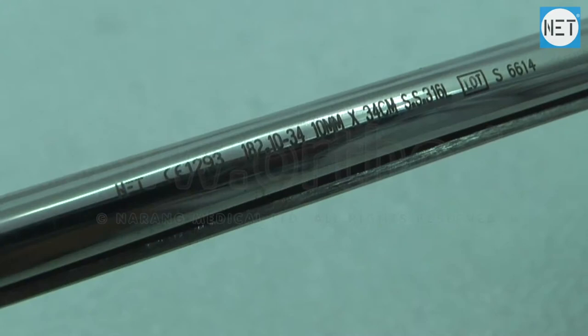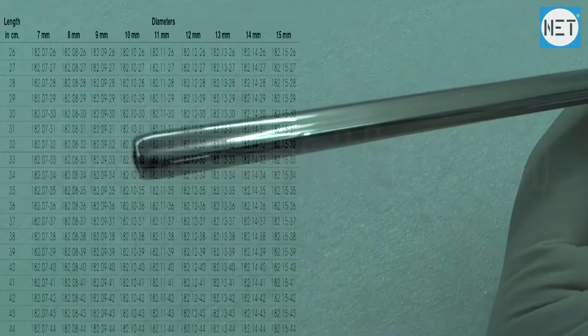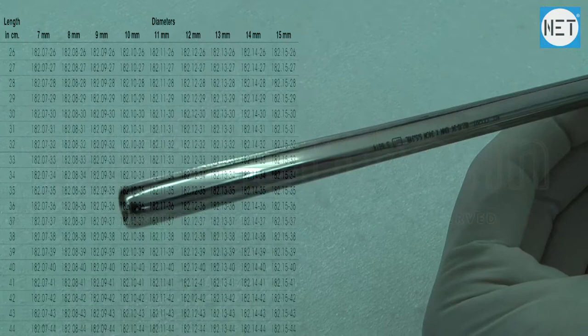Kershner Cloverleaf Nails Curved for Tibia are available in lengths varying from 26 to 44 cm and in diameter varying from 7 to 15 mm. These are available in stainless steel.